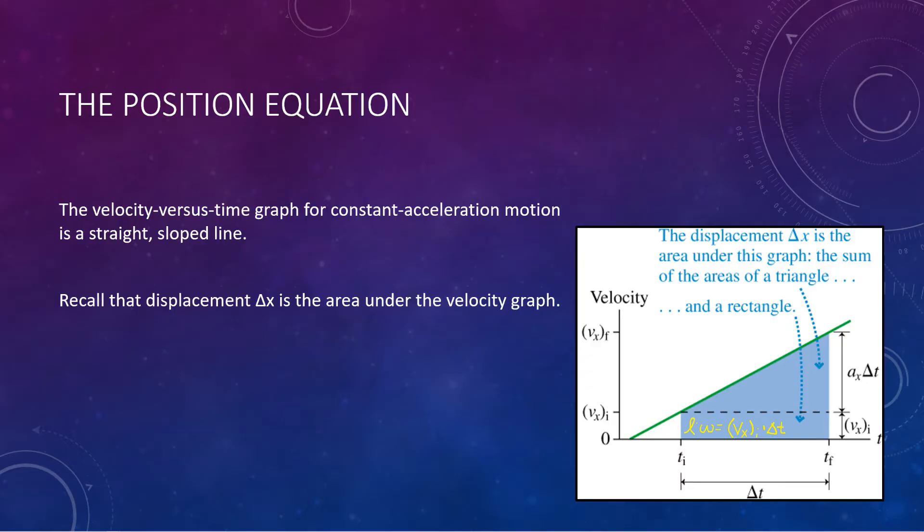Now, to get the area of the triangle, we have to use one-half base times height. So we'll end up with one-half times the base, which is the time interval delta t, times the height. Now, notice the height is technically vx initial to vx final, so it's your delta v. Now, delta v, if you use the acceleration equation, is equal to ax times delta t. So this is just the rearrangement of the acceleration equation, times ax delta t.